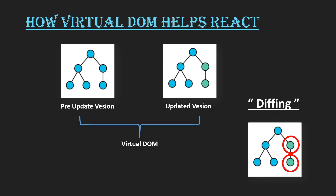Each time there is any update in any component, the React virtual DOM maintains two versions — one updated and one pre-update. After creating these two versions, React compares them to check which elements need to be updated. This process is called diffing. After comparing, React finds that only certain components need to be updated in the actual DOM, because only those elements changed and everything else remains the same.